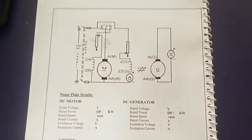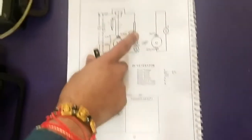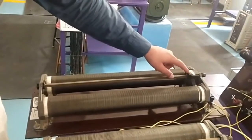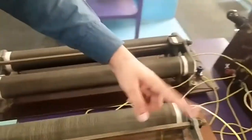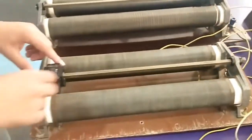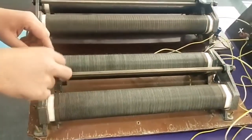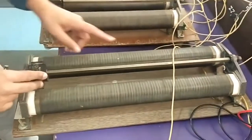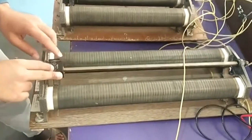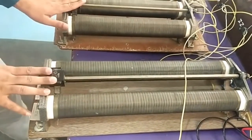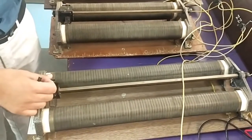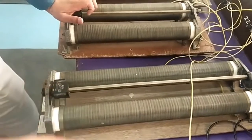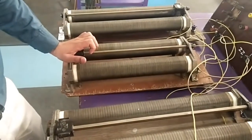Once connections are complete, cross-check the positions of the three rheostats: motor field rheostat at minimum resistance, motor armature rheostat at maximum resistance, and generator field rheostat at maximum resistance. Then turn on the supply and try to run the motor at rated speed. Once running at rated speed, slowly increase the field current and check the generated EMF.